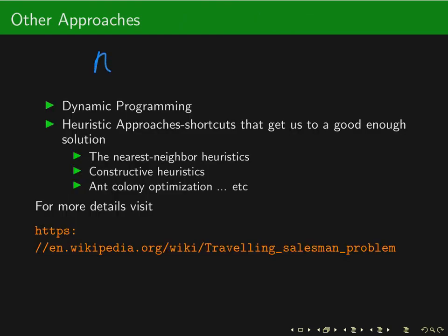Since the brute force approach with O(n!) complexity is not practical in real scenarios, we have other approaches for solving the TSP problem. One of them is the dynamic programming approach, which is slightly better with a complexity of O(n² · 2ⁿ). Using this algorithm you can actually calculate up to a 30-city problem, but beyond that it is also not practical.